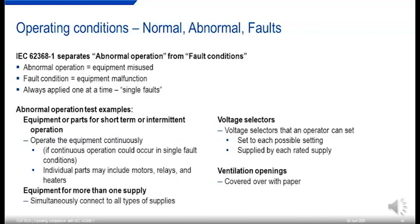Abnormal operation examples: equipment or parts for short-term or intermittent operation — like motors, relays, and heaters — are operated continuously if that could occur under a single fault condition. Equipment for more than one supply is connected to all types of supply it's designed for, all at once. Voltage selectors are effectively set wrong to see if that causes any hazard. And ventilation openings are covered with a standardized paper — one at a time — to test the effect of obstruction.